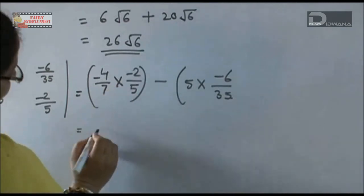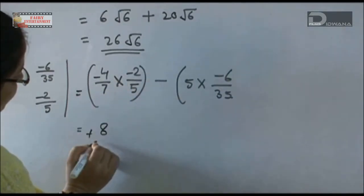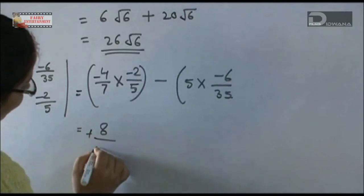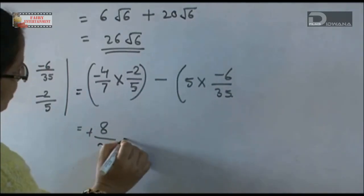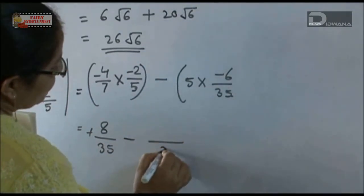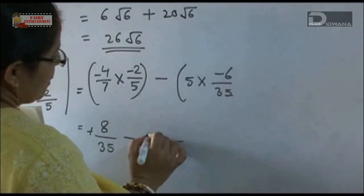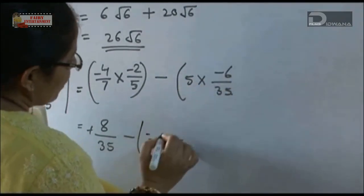4 times 2 is 8. This minus value will be plus. 7 times 5 is 35. Again it will be minus. 6 times 5 is 30.